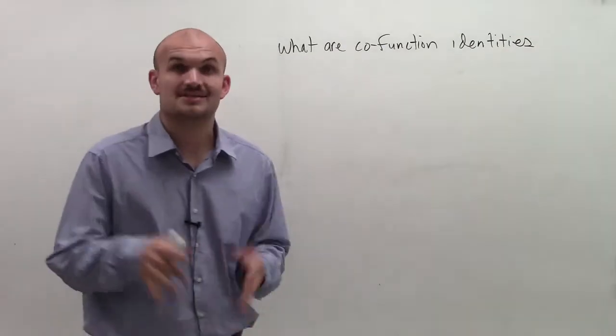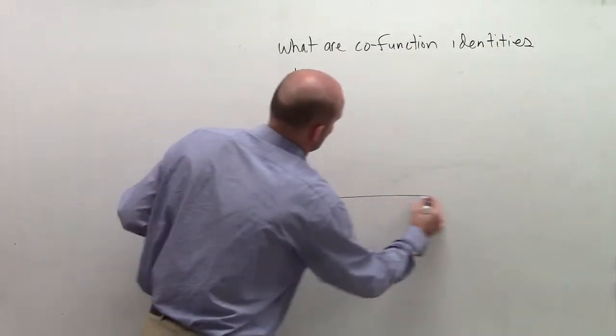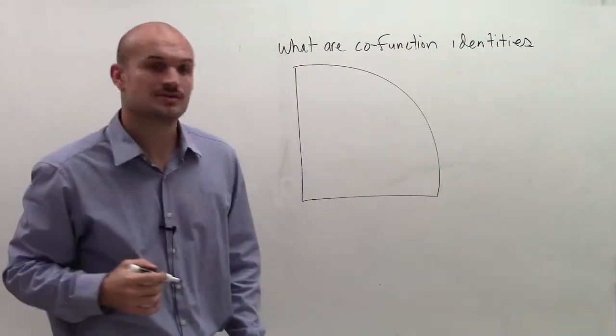What are co-function identities? To understand co-function identities, what I want to do is create the first quadrant of the unit circle.